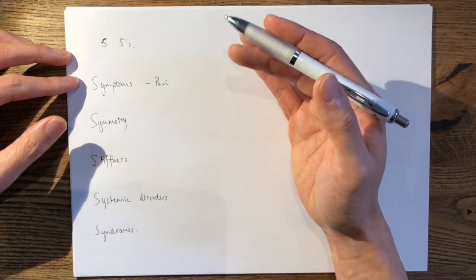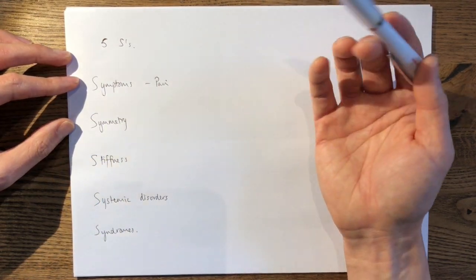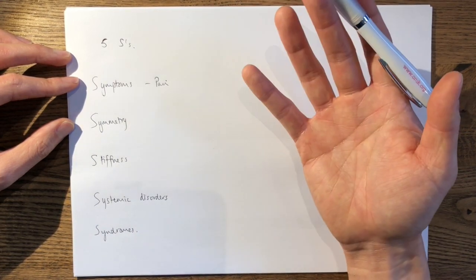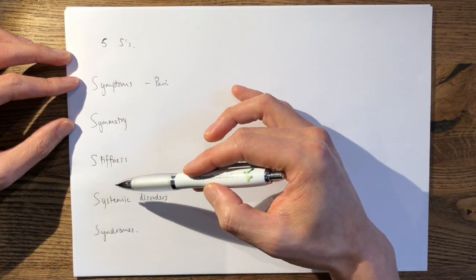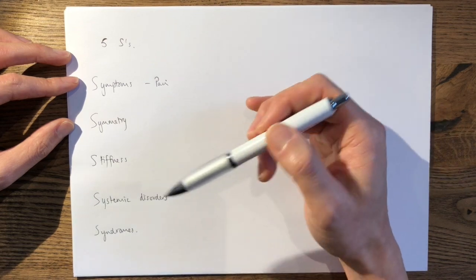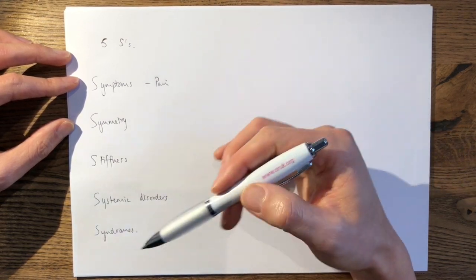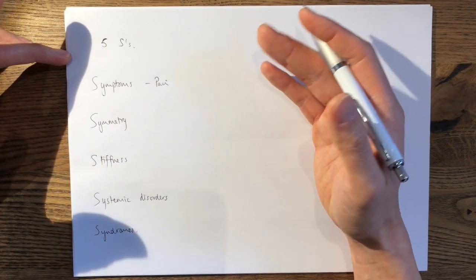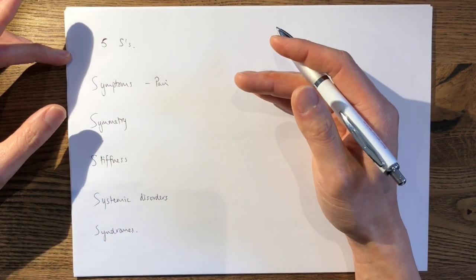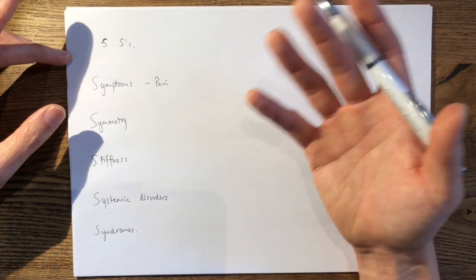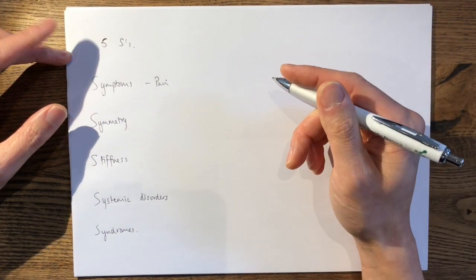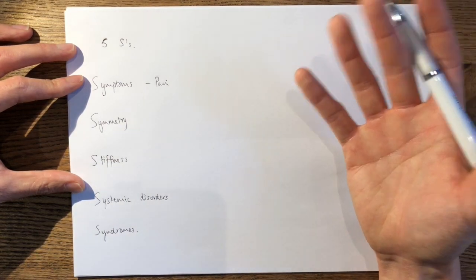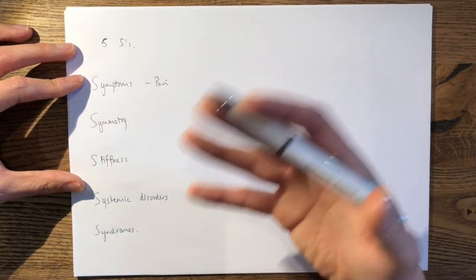However, if you had a pain-free, symmetrical genuvarum or valgum with a complete full range of movement without associated systemic symptoms or syndromes, then this is most likely to be physiological, which is a benign condition and probably represents a variation of the normal growth pattern. And this is where you draw the Salineus curve to explain what is a normal growth pattern.